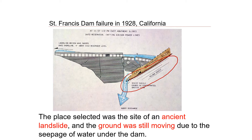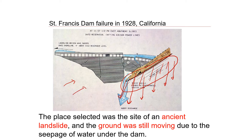That part of the slope was unstable because many years ago it had failed as a landslide, but the previous site investigation didn't pick it up, so the dam was built on this potentially unstable slope. When the dam was filled with water there was some seepage through this part, because the soil from the ancient landslide had undergone movements over time making it very soft and loose. That was the major reason for this failure.